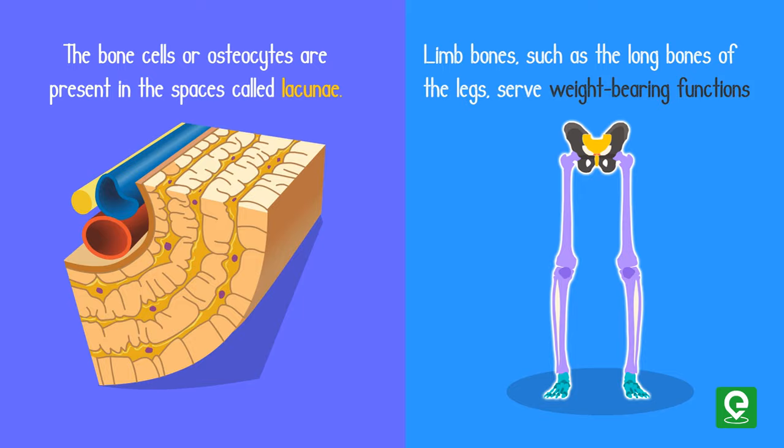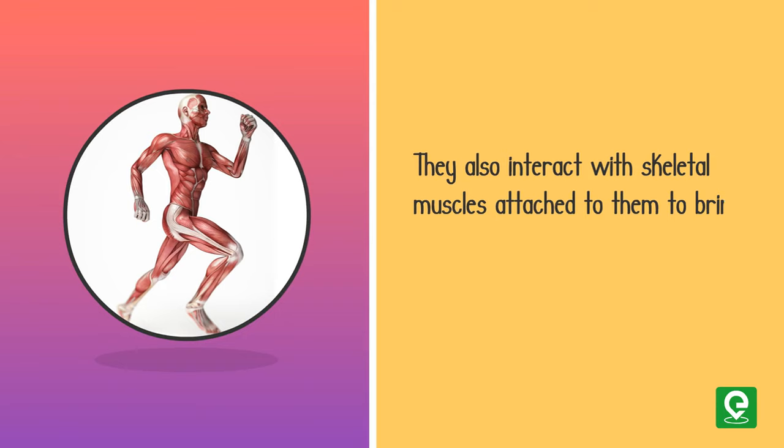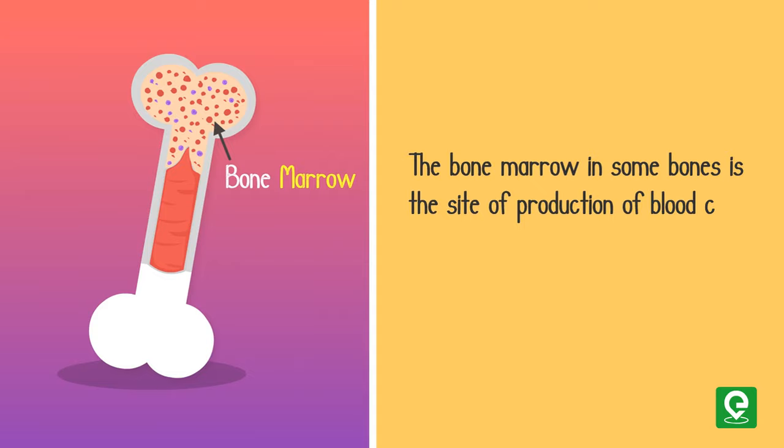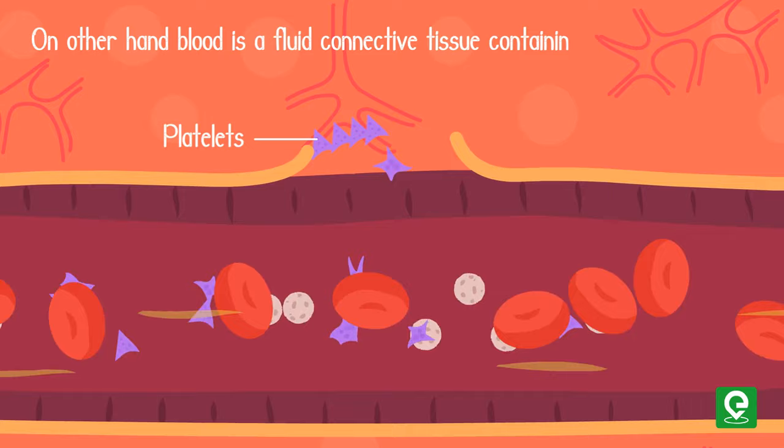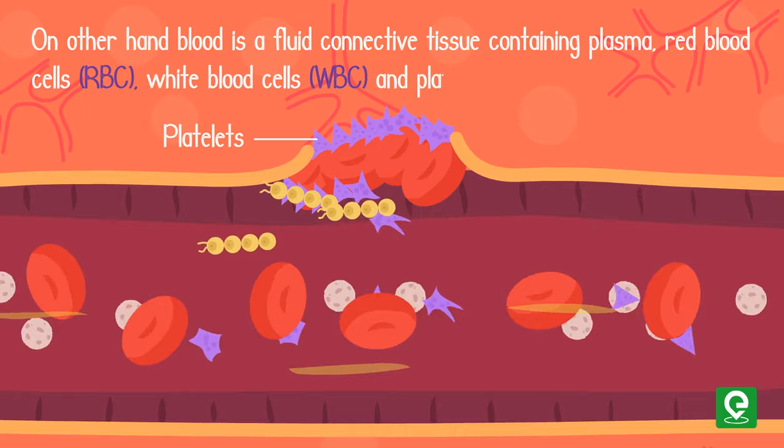Limb bones, such as the long bones of the legs, serve weight-bearing functions. They also interact with skeletal muscles attached to them to bring about movements. The bone marrow in some bones is the site of production of blood cells. On the other hand, blood is a fluid connective tissue containing plasma, red blood cells (RBC), white blood cells (WBC), and platelets.